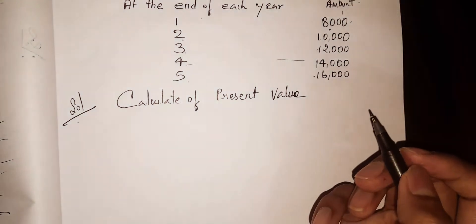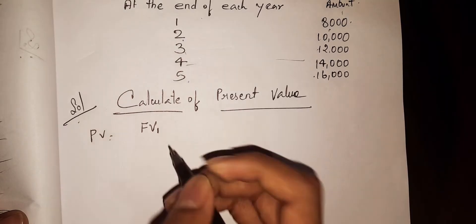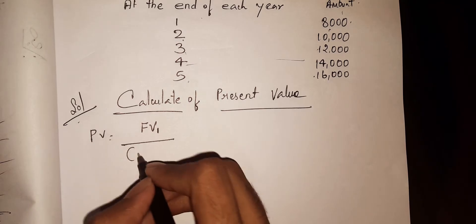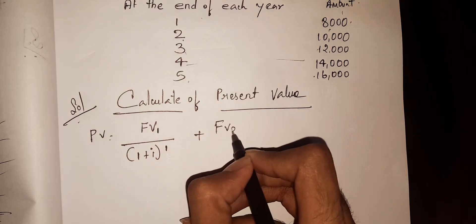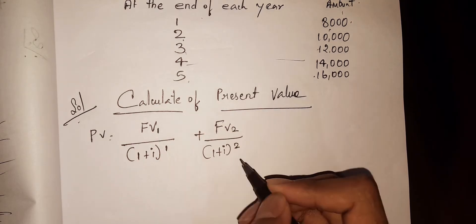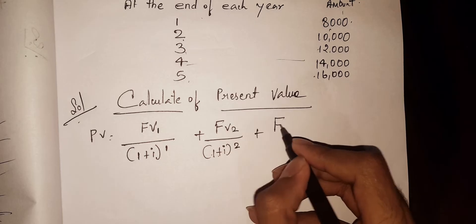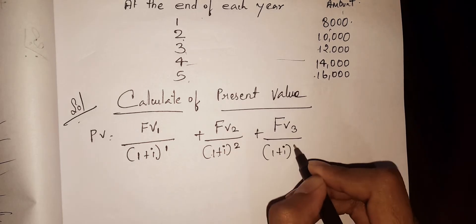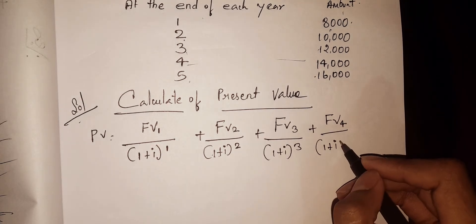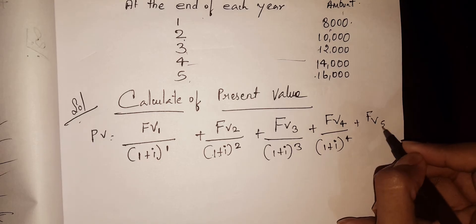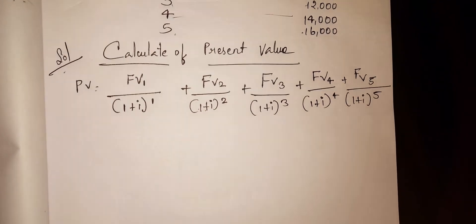Calculation of present value. The formula to find present value is: Future Value of Year 1 divided by (1+i)^1, plus Future Value of Year 2 divided by (1+i)^2, plus Future Value of Year 3 divided by (1+i)^3, plus Future Value of Year 4 divided by (1+i)^4, plus Future Value of Year 5 divided by (1+i)^5. This is the formula — a very easy formula.